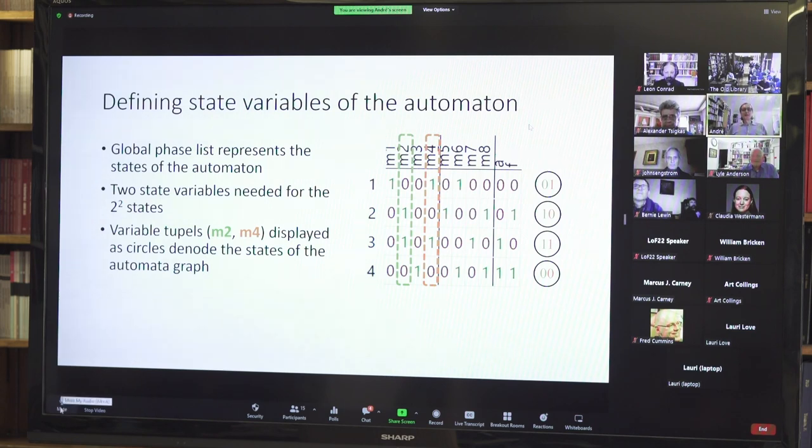The next step is defining the state variables of the automaton. The global phase list represents the states of the automaton. We see in this table exactly those four variable vectors which can satisfy the modulator. To denote those four states, we need only two variables. We can choose the combination of the variable tuple M2 and M4 for displaying the states. You see the states as circles with the numbers 0,1; 1,1; 1,0; and 0,0. These are the states of the automaton graph.